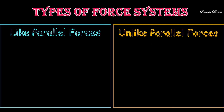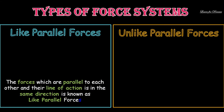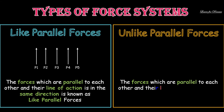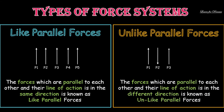The next two types of force systems are like parallel forces and unlike parallel forces. These two are the subtypes of parallel force system. The forces which are parallel to each other and whose line of action is in the same direction are known as like parallel forces. Here you can see all forces are parallel to each other as well as in the same direction. The forces which are parallel to each other but whose line of action is in different directions are known as unlike parallel forces. Here in this diagram you can observe that forces P2 and P4 are in the opposite direction to forces P1, P3 and P5.